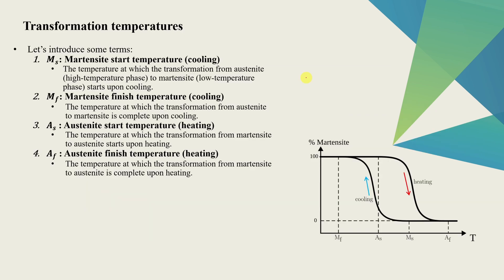Now to understand the material model for shape memory alloy, we need to introduce some terms. Let's say initially at lower temperature, we have 100% martensite. Now as we start to increase the temperature, there comes one temperature denoted as As, after which martensite starts to transform into austenite. That's why percentage martensite is going down and percentage austenite will go up. That is not shown on this graph, but the addition of two phases will always be 100.